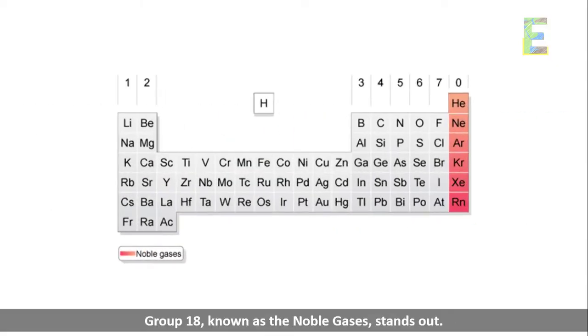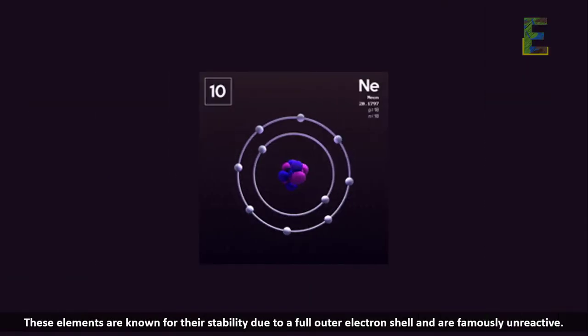Noble gases. Group 18, known as the noble gases, stands out. These elements are known for their stability due to a full outer electron shell and are famously unreactive.